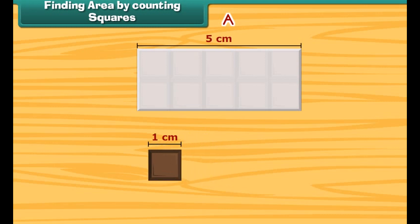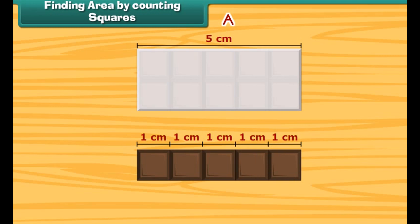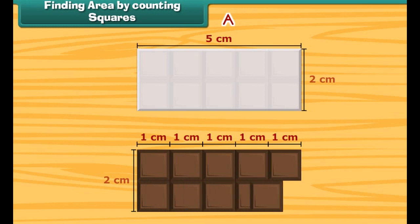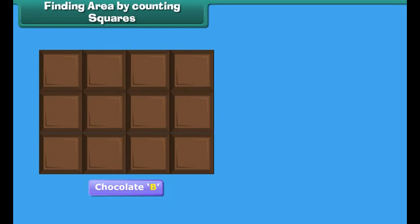Friends, we have these two chocolates. Let us find out which one is bigger and which one is smaller. We will take the help of one square piece of chocolate of side 1 cm. The length of chocolate A is 5 cm, so 5 squares can be arranged along its length. The width of this chocolate is 2 cm, so 2 squares can be arranged along its width. Thus, in total, 10 squares can be arranged on it. So, the area of chocolate A is 10 cm².